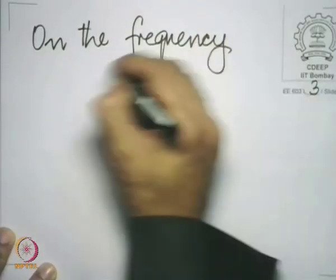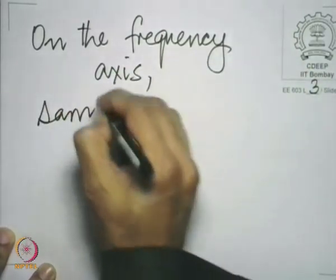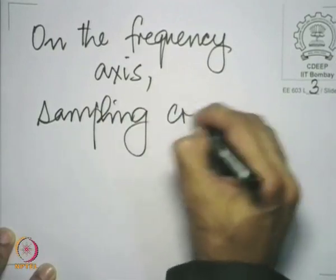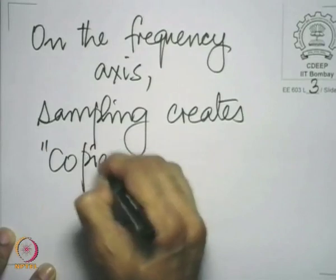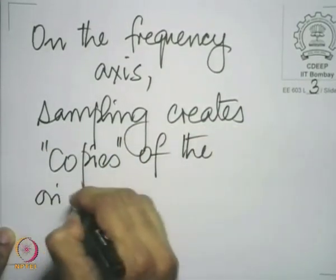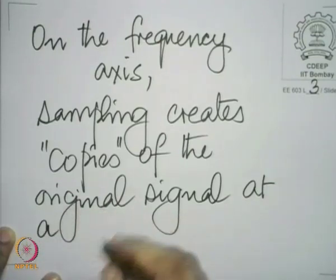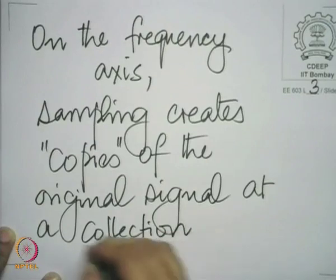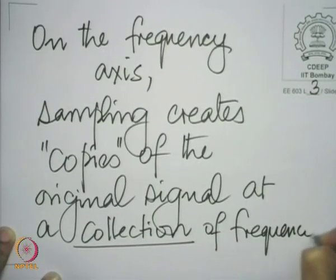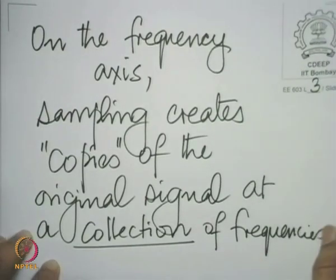A simple approach to identifying the correct x(t) is to go back to what we did on the frequency axis. On the frequency axis, what does sampling do? Sampling creates copies at a collection of frequencies. Let me try and illustrate this with an example, or at least with some intuitive explanation.